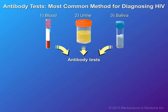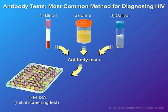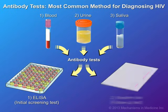Antibody testing is a two-step process. First, an initial screening test is performed, called an enzyme-linked immunosorbent assay, or ELISA antibody test. And second, a follow-up test is performed, known as a Western blot test.